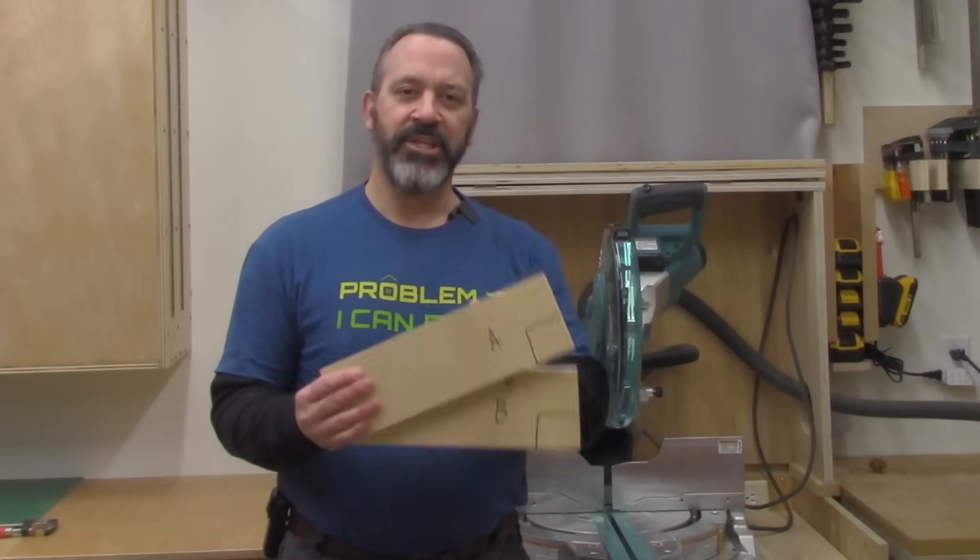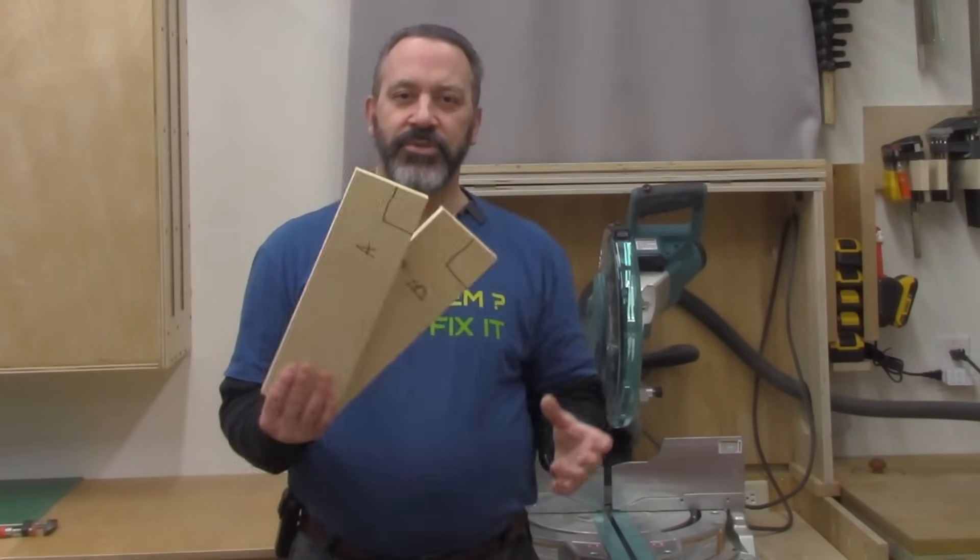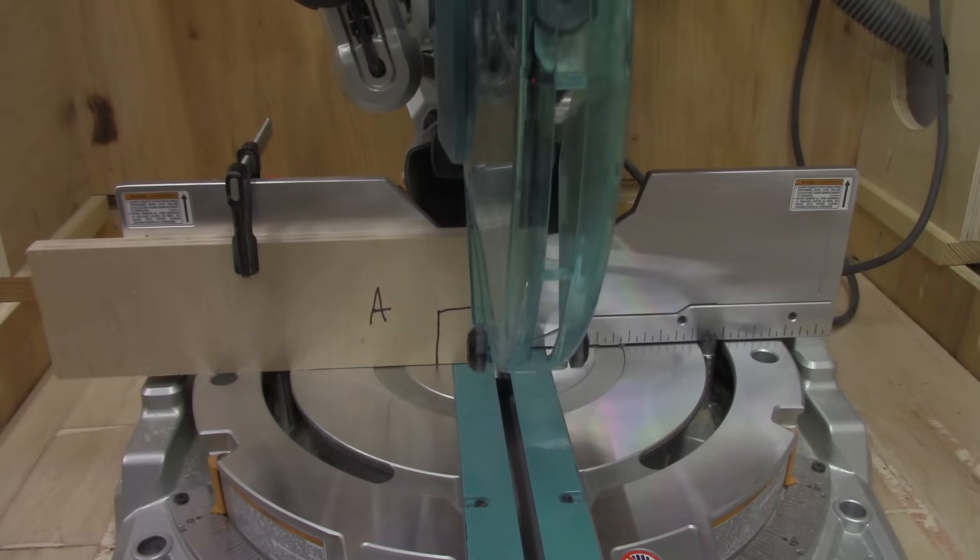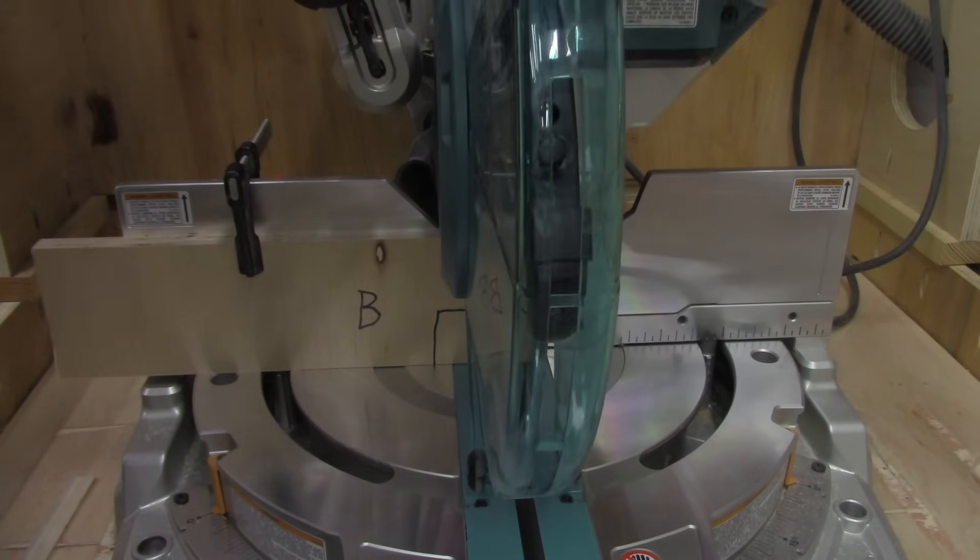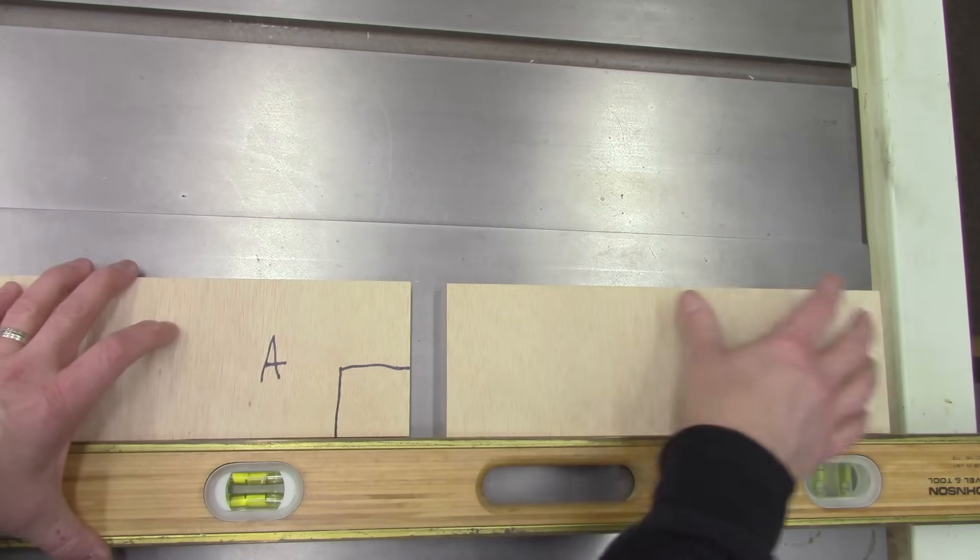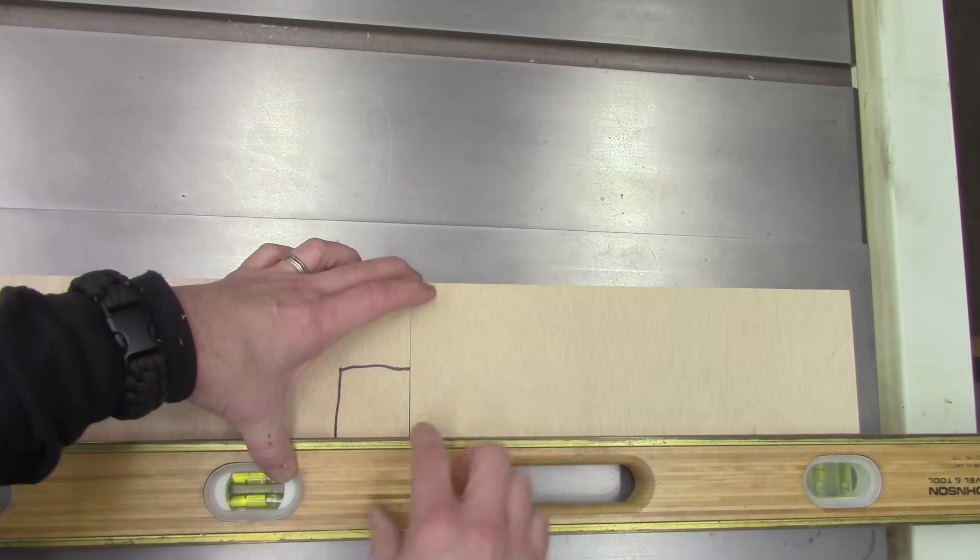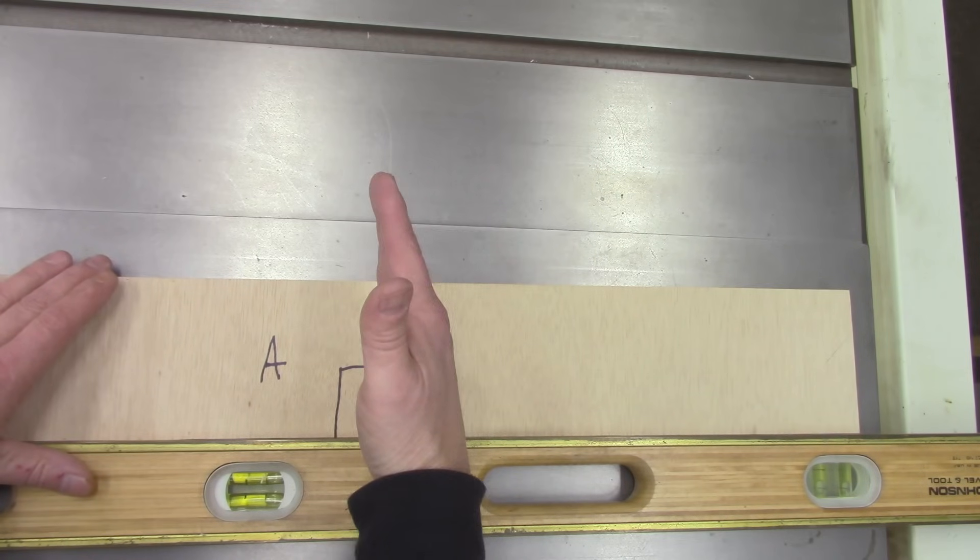To make sure our bevel angle is set at zero, we're going to do the same thing we did to set the miter angle. We're going to cut two pieces of wood. They're just going to be a little bit smaller. They're going to be the width of the maximum cutting height of your miter saw. Mine's about four inches. So you just need two pieces of wood with a straight edge along the bottom, and we're going to make two cuts and see how they match up. Here's the two boards I just cut. Just like before, we're going to flip one of them over, put them against the straight edge, and bring them together. And I'm just slightly open at the bottom, so my saw is tipped this way. So I need to bring it back like this, just a tiny bit.